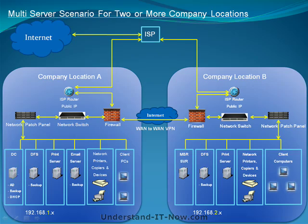The fourth scenario is multiple servers with two or more company locations — the ideal network hardware setup for small businesses with more than one location. The ISP provides internet connections to both locations A and B. Each location has its own ISP router connecting to a firewall, and each firewall has a WAN-to-WAN VPN connection allowing location A and B to communicate over the network. Each location also has its own network switch and patch panel connecting all networkable devices.